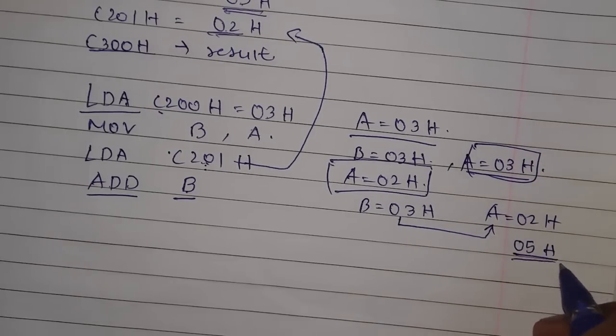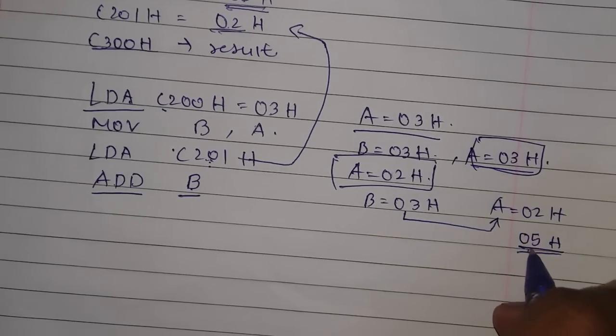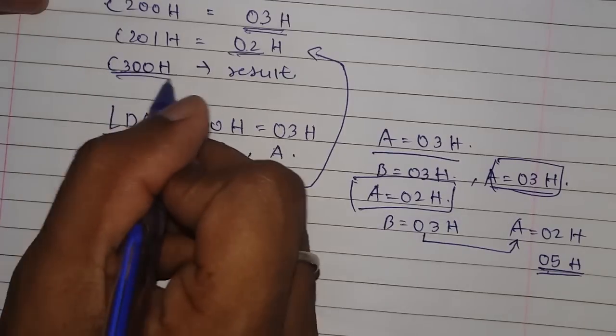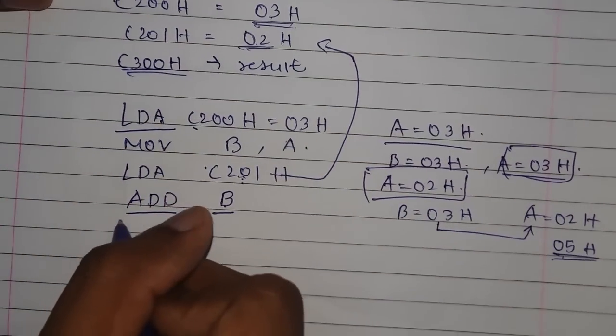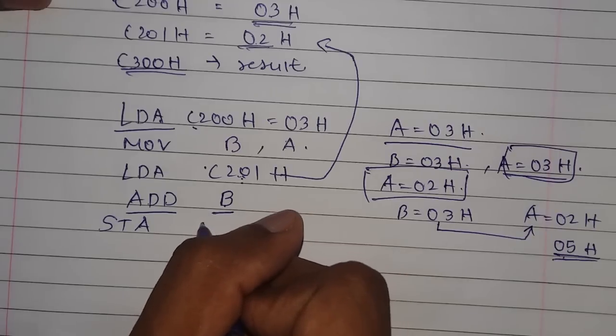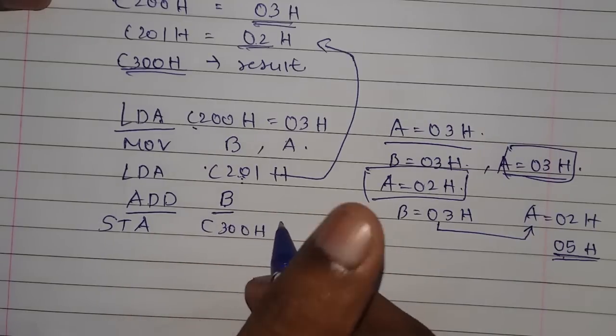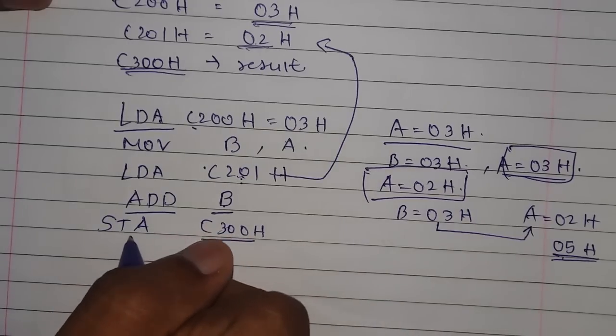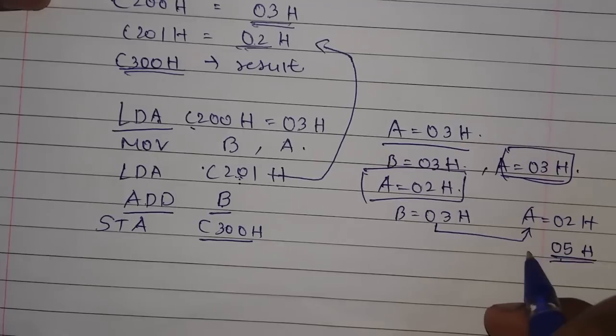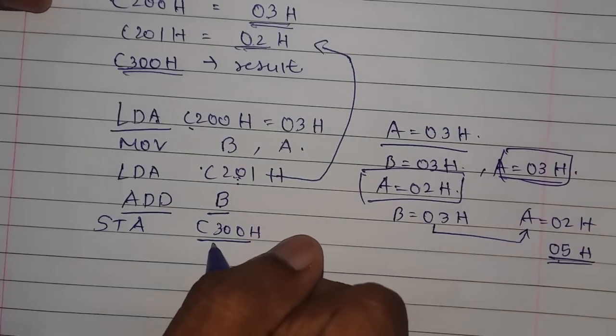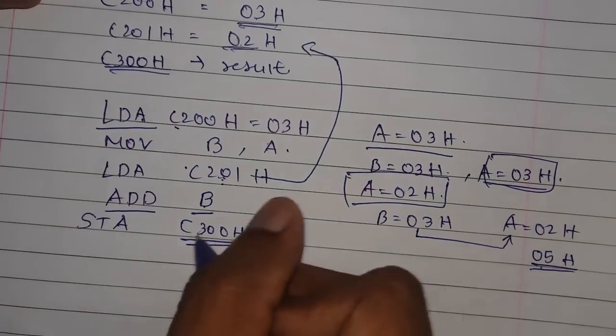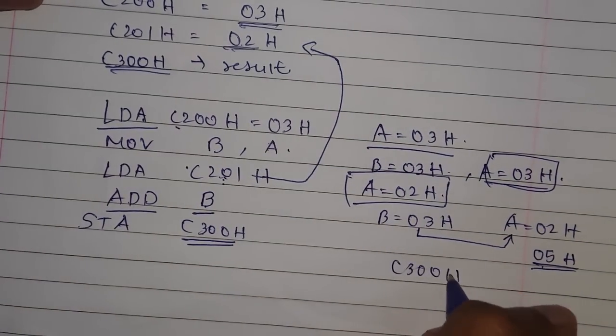But now we need to store this answer in a certain memory location which is C300H. For that we will use another instruction STA and pass our memory location here. This will store the accumulator's data in this memory location.